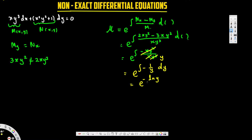We can't directly cancel e and ln in this pattern. We move the negative to the exponent: e^(ln y^(−1)). Now e and ln cancel, giving y^(−1), which we write as 1/y. This is our integrating factor.